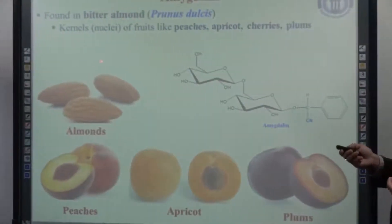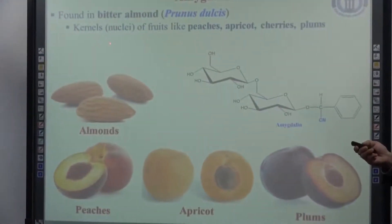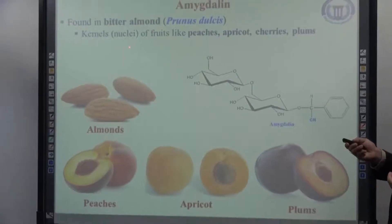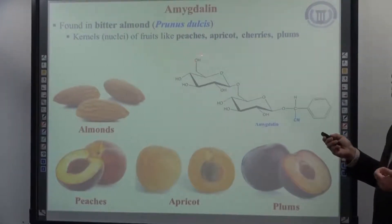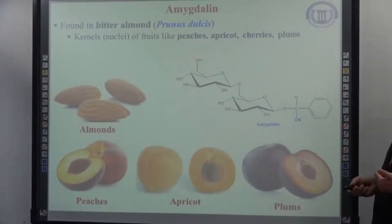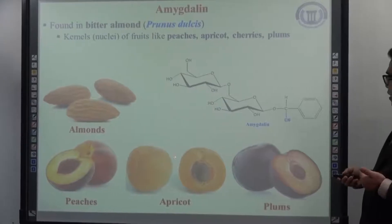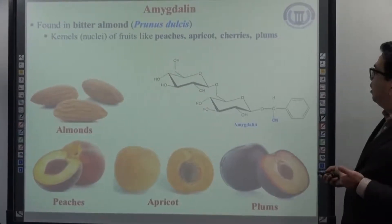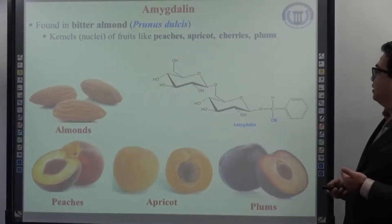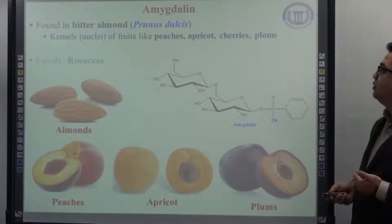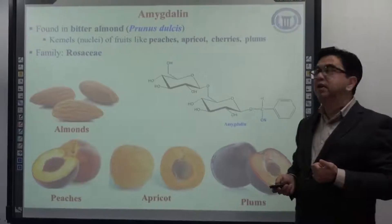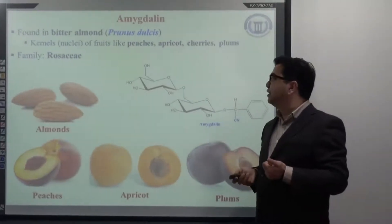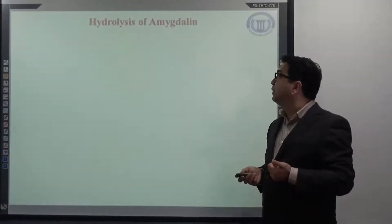As I mentioned, the kernels — that is the nuclei of fruits like peach, apricot, cherries, palm, etc. — also contain amygdalin. It belongs to the family Rosaceae.